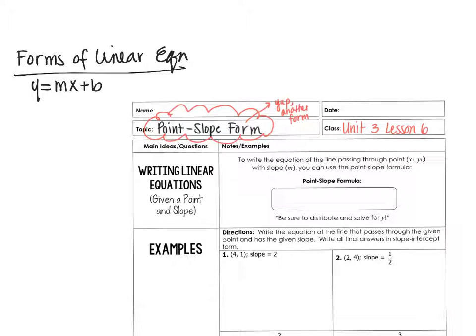The second form was standard form: ax plus by is equal to c. Standard form is good for setting up word problems and systems later on when we do our next unit — systems of equations. It's also easy to find x and y-intercepts.